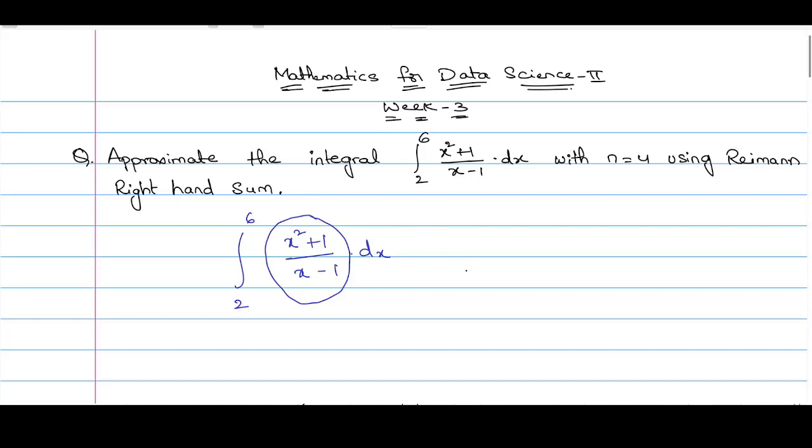And options are like 19.4, 23.2, 30.5, and 10. Then in this case, you don't need to find the accurate answer. You can actually approximate this integral. So in those situations, this Riemann sum comes in handy. Let us try to approximate this integral using Riemann right-hand sum.